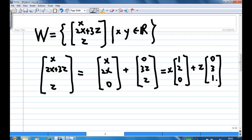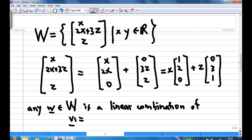That means that any vector in W is a linear combination of 1, 2, 0 and 0, 3, 1. So any W inside the space is a linear combination of 1, 2, 0, which is V1, and V2, which is 0, 3, 1.